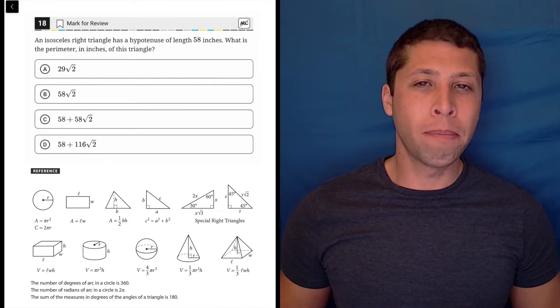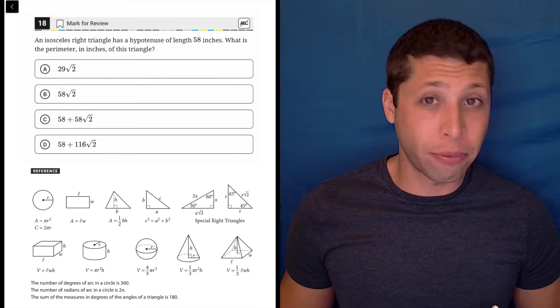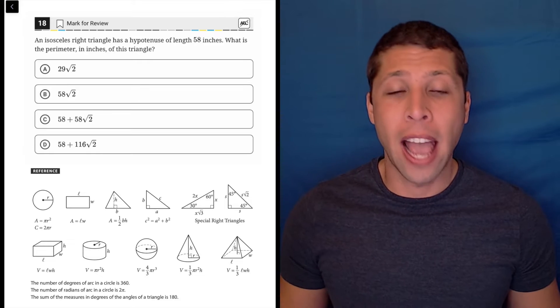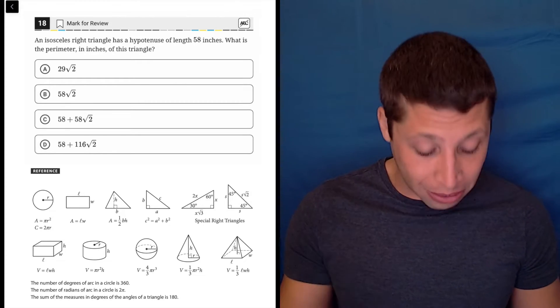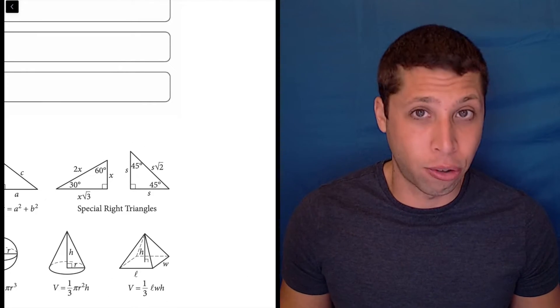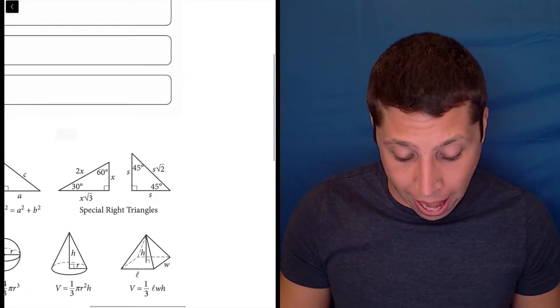Here we have a geometry question where most of us are going to need to go back to that reference chart that's included in the test and make sure that we understand the rules for right triangles, specifically the 45-45 right triangle. That's what they're telling us we have here.